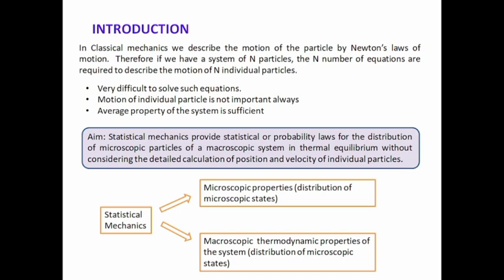Statistical mechanics provides the link between the microscopic properties of the system and the corresponding macroscopic thermodynamic properties of the system. The microscopic properties correspond to the distribution of the microscopic states, and the macroscopic properties are related to the distribution of the total microscopic states. So statistical mechanics is concerned with understanding how various macroscopic properties such as energy, pressure, and temperature arise as a consequence of the microscopic nature of the system.